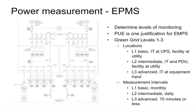The key takeaway from comparing the 2.0 and 1.3 PUE scenarios is that mechanical systems have gotten very efficient and have really been driving the efficiency standard. But as mechanical gets more and more efficient, the opportunities for efficiency start shifting more and more to electrical — so there are great ideas for improving electrical efficiency in data centers, tracking it, and using the emerging standards to verify and comply.